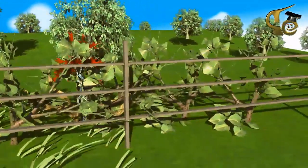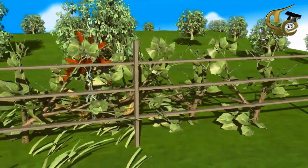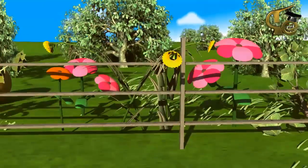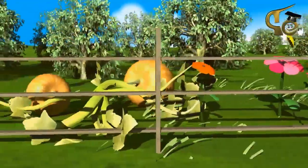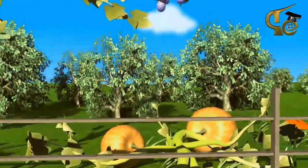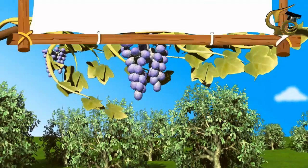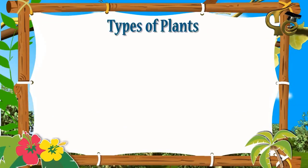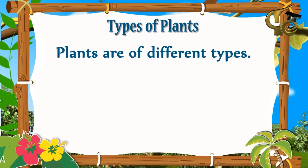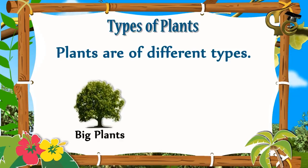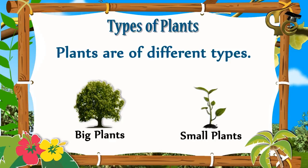You can see many plants around us. Plants are of different shapes and sizes. There are different types of plants, such as big plants and small plants.